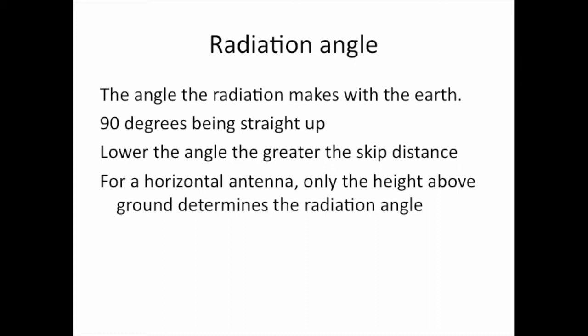The radiation angle is the angle your transmitted wave makes with the earth — 90 degrees being straight up and zero degrees being perfectly parallel to the earth. The lower the angle, in general, the greater the potential skip distance. I say potential because even at a very low angle, the ionosphere has to be strong enough to support the refraction of the electromagnetic wave. For a horizontal antenna, only the height above ground determines the radiation angle.